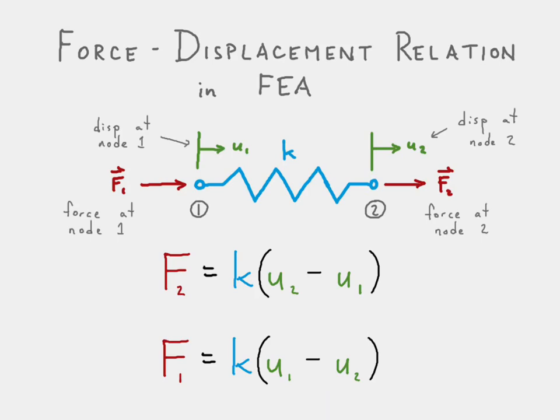Now, why can I say that? If we look at the first equation, F2 would be positive if the spring is in tension. If that spring is in tension, U2 would be greater than U1, and that would give us a positive force at F2. Conversely, at node one, F1 would be positive if the spring is in compression — and sure enough, if U1 is bigger than U2, F1 would be positive, indicating compression. So let's go ahead and move on to the next part.